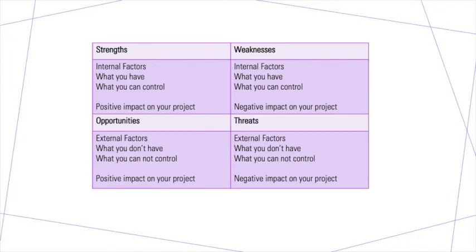Threats are also negative, but these are external factors — things you don't have any control of. A classic example is COVID-19. If you were planning to interview someone, visit somewhere, or do observations or work experience, and a lockdown occurred, that would have a negative impact on your project because you couldn't access those opportunities, and you'd have no control over that. External factors are essentially risks — what's the likelihood of risk, and if something happens that you can't control, is it going to derail your whole research project?